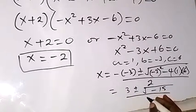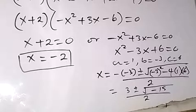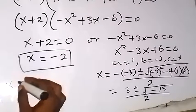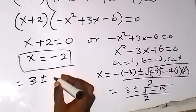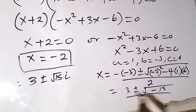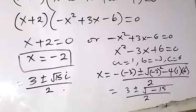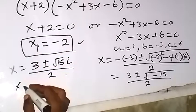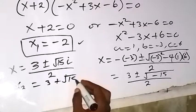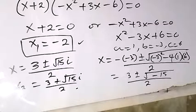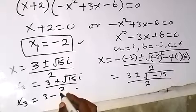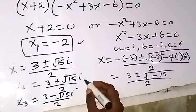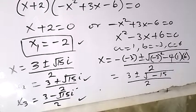We have minus 15 all over 2. The minus under the root we can separate root of minus 1 as i, such that x equals 3 plus or minus square root of 15 times i, all divided by 2. So these are the three solutions: x₁ equals minus 2, x₂ equals 3 plus root 15 i over 2, and x₃ equals 3 minus root 15 i over 2. We say thank you for joining us and don't forget to subscribe to this channel for more of our videos. See you in the next class, bye for now.